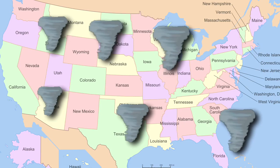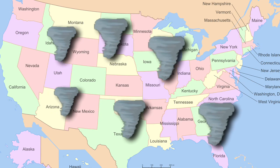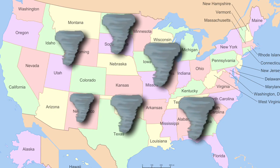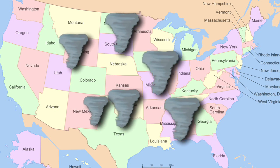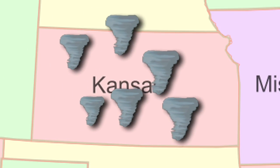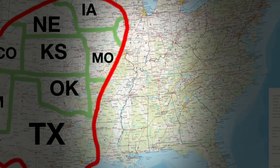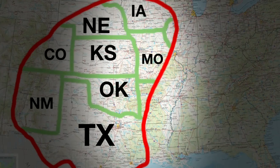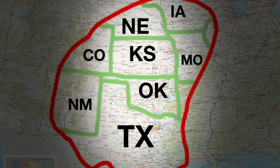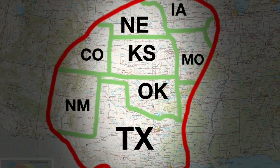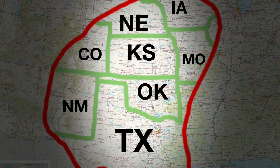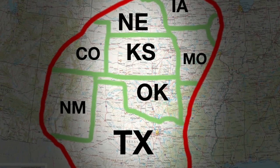Tornadoes occur in many countries around the world all throughout the year, three-quarters of which touch down in the USA. And out of all of those, Kansas gets it worst. A broad belt extending northwards from Texas to Iowa, known as Tornado Alley, has seen them all.